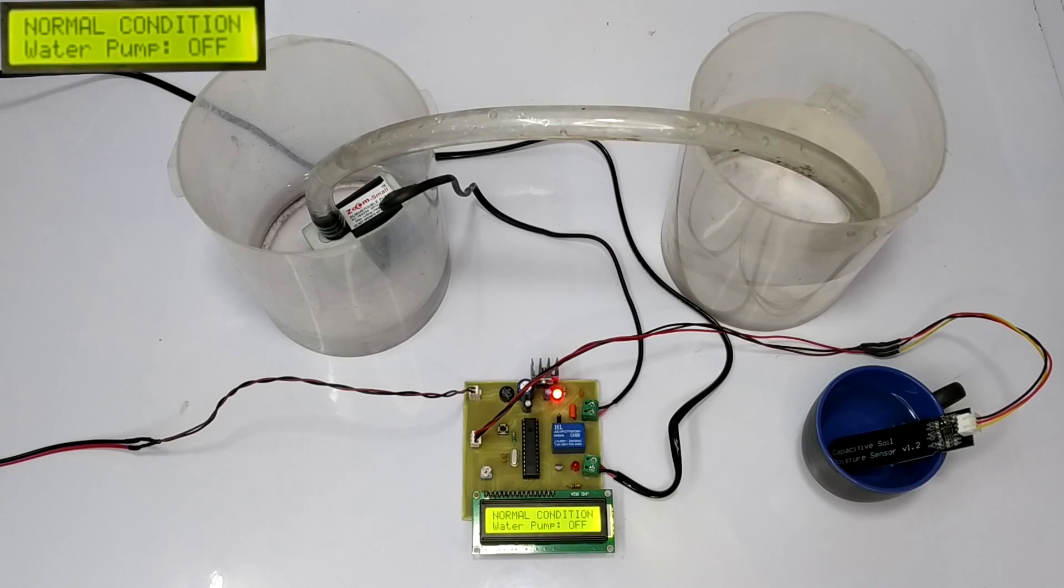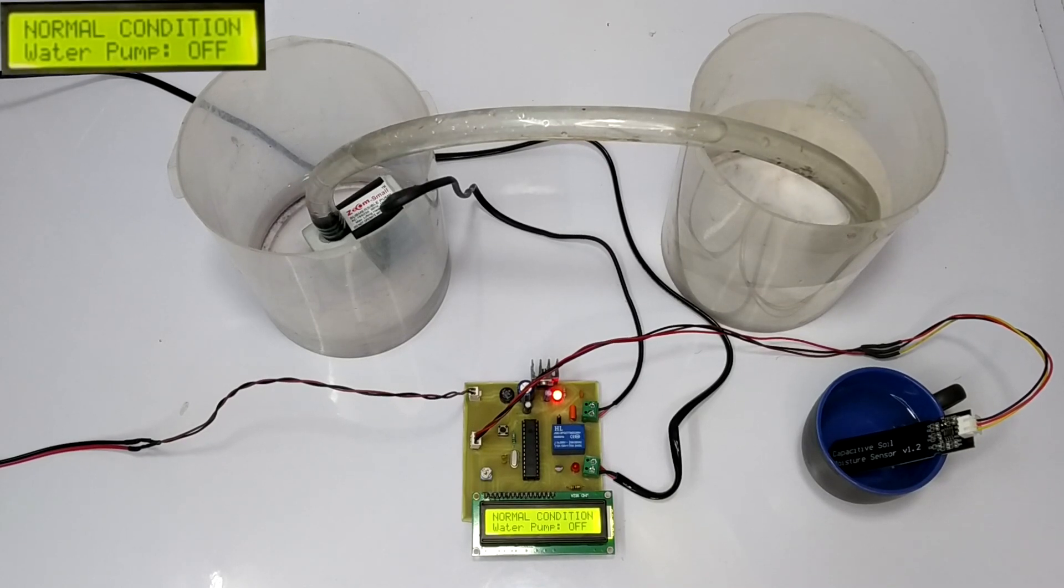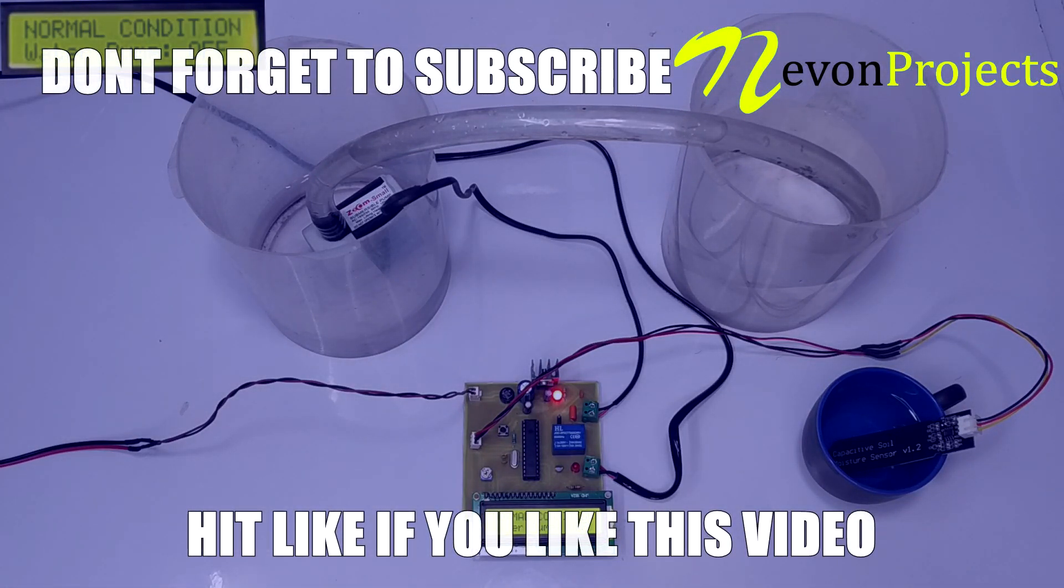So, as we can see, with the help of this project, we can maintain the moisture content in the soil automatically and ensure effective growth of the plants. This is the working of auto-irrigation using soil moisture sensing using Atmega. Thank you.